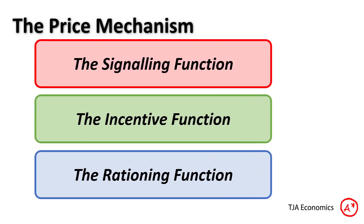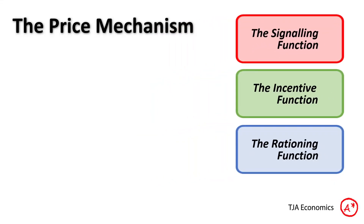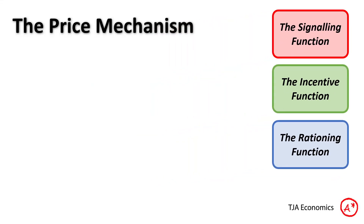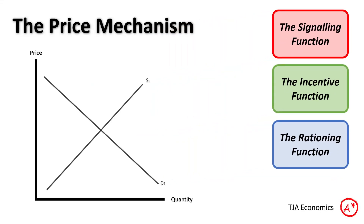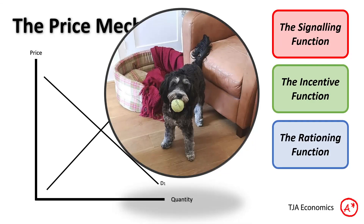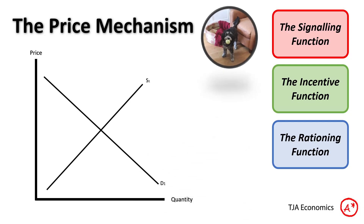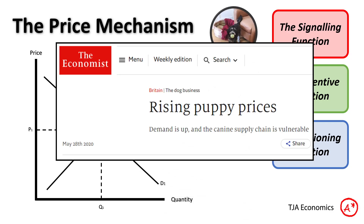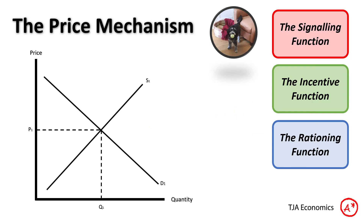So let's look at an example of this in action. Many of you may remember in the lockdowns of 2020, puppies were very popular — the demand for puppies skyrocketed. As this article from The Economist from May 2020 shows us, the demand for puppies was booming, especially in the UK. Here is our supply and demand curve, our fairly basic market.